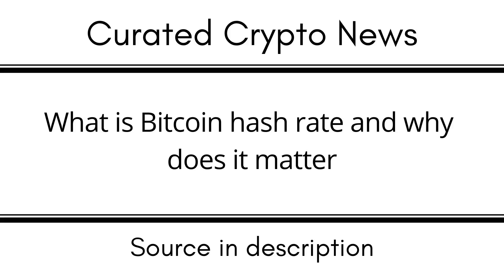There has long been a belief that the hash rate — the total number of computations performed by Bitcoin miners — and the price of BTC are related. However, this notion might seem incorrect, as a manufacturer's level of effort in producing a good has no bearing on the price consumers pay in competitive marketplaces. That said, this might not hold true for the Bitcoin market, as there are only a few mining pool operators who could coordinate to control the market price. Furthermore, the inelastic nature of Bitcoin's supply and intense competition in the mining industry might drive miners to act differently.